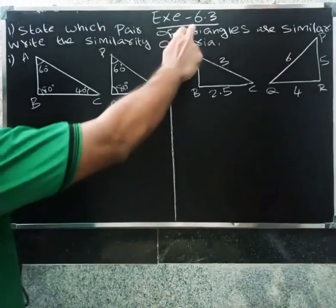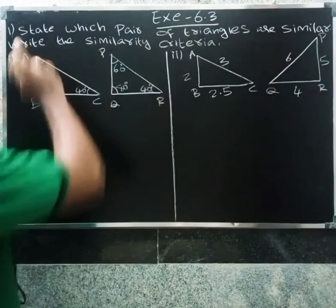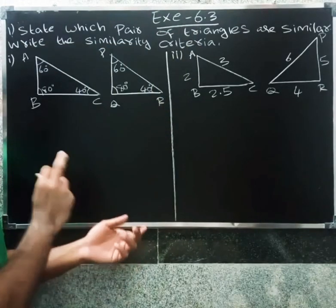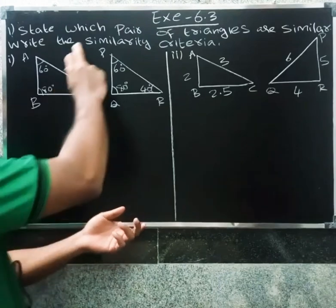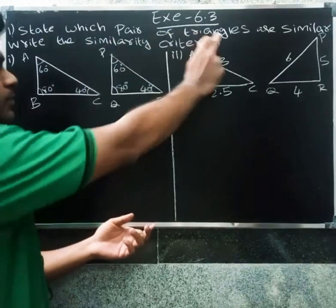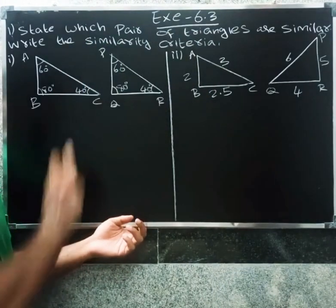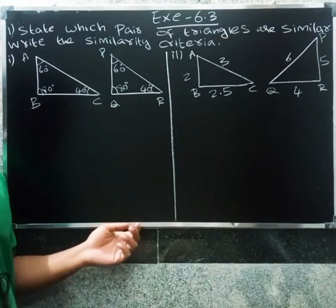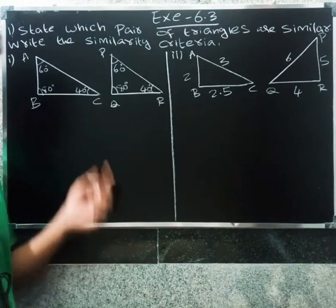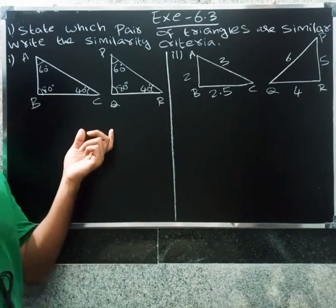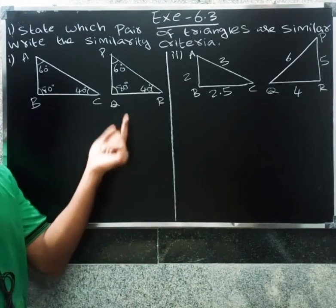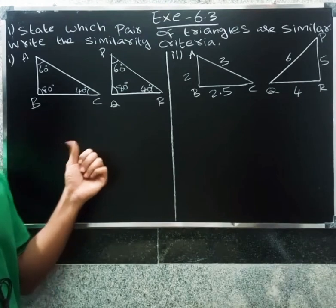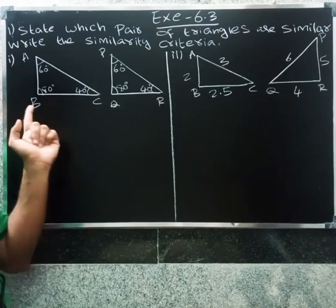Welcome. In the next exercise 6.3, first question: in which pair of triangles are similar? Similarity criteria: AAA, SSS, SA, or SAS.